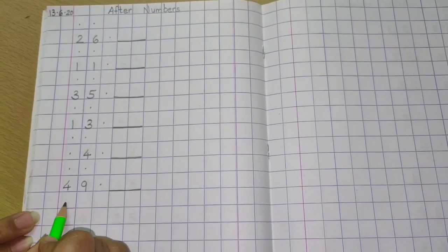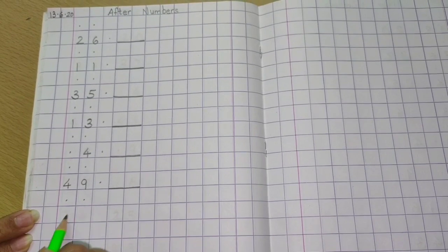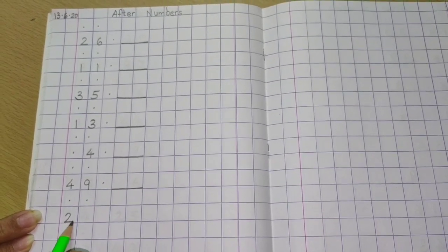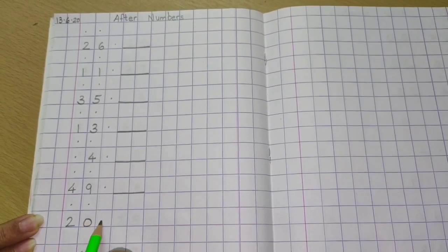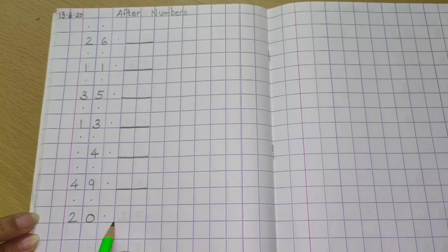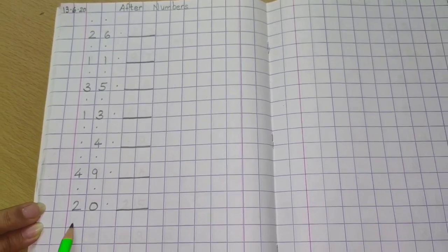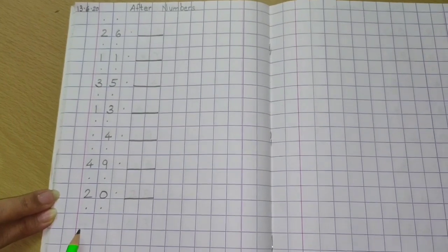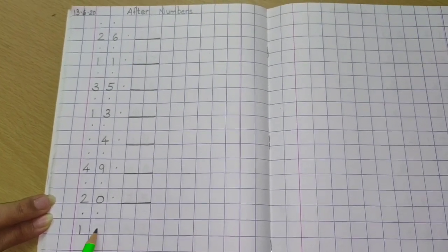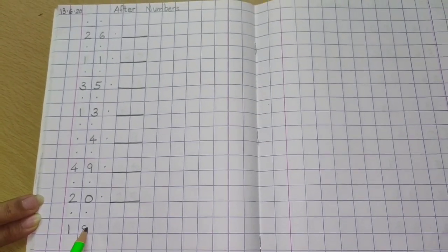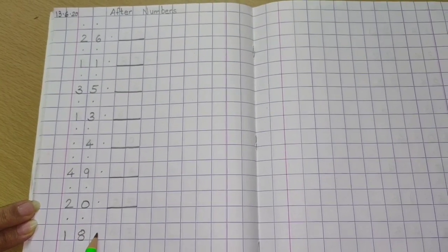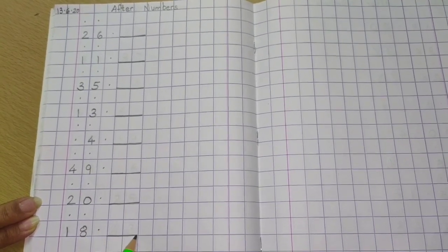Then underneath 49, again two dots, then 20. One dot and dash on two boxes. Then again two dots and next number is 18. One more dot and dash on two boxes.